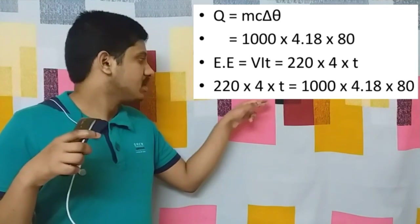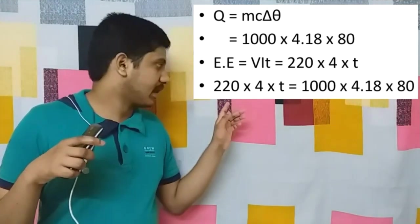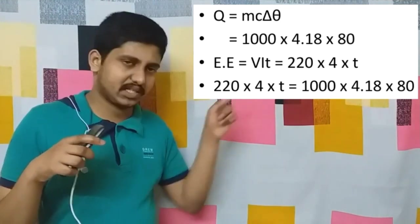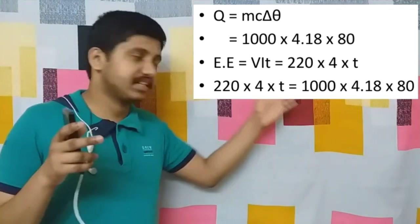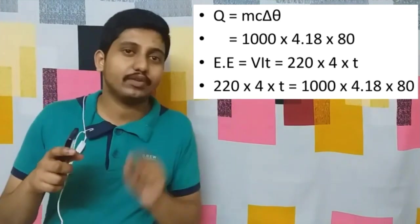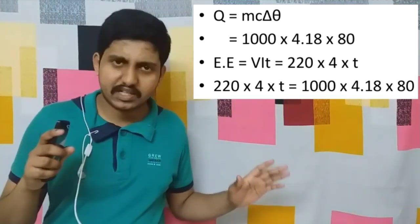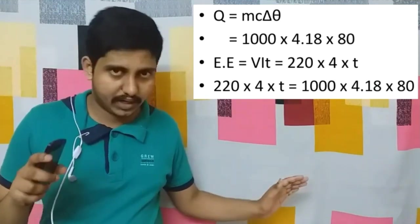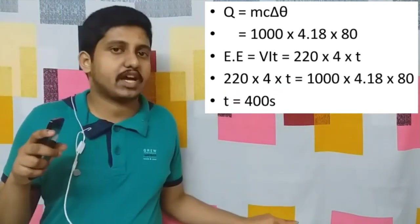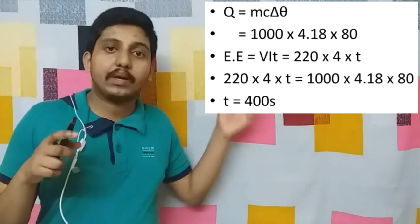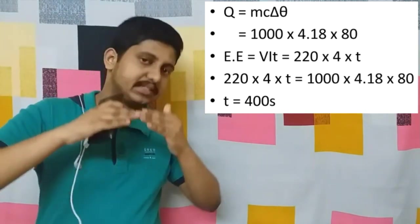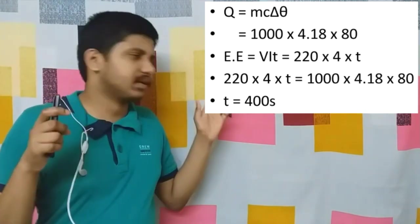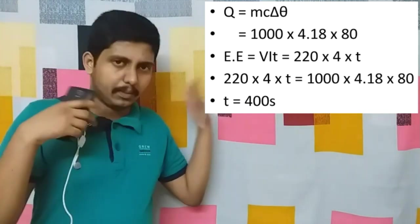Cancel 4.18 and 220 down to 110, cancel zeros. So we have 11t = 4000, which gives t = 4000/11. You can approximate it as 4000/10 = 400, but actually when divided by 11 we have to choose a number less than 400.